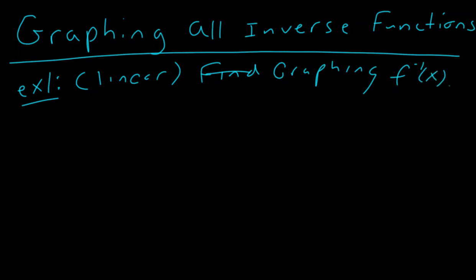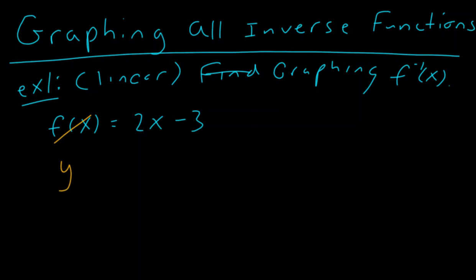For our very first example, example one — this is a linear function. We have f of x is equal to one-half times 2x minus 3. We know our very first step: we change f of x into y, and we can say y is equal to 2x minus 3. Our next step, we take our x and our y, we switch them. So we have x is equal to 2y minus 3.